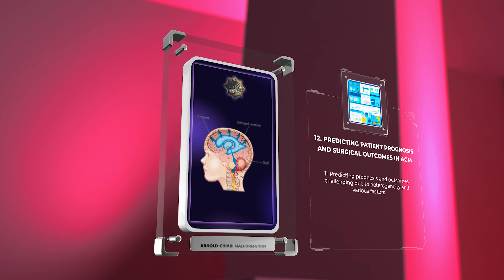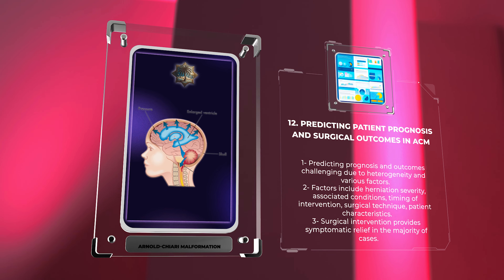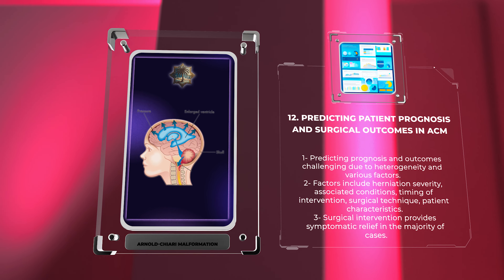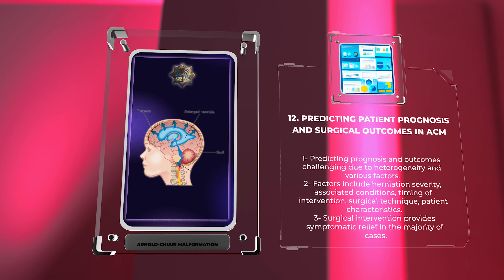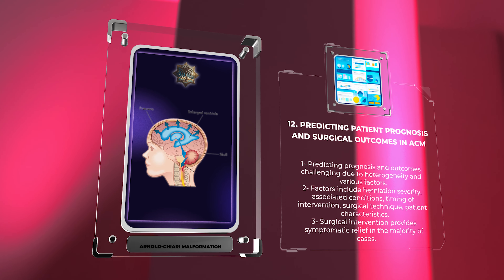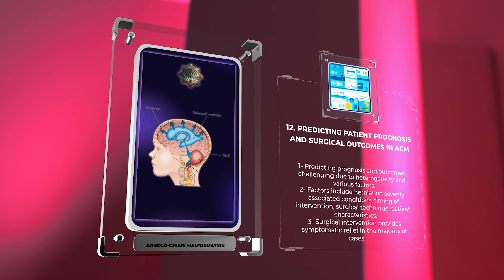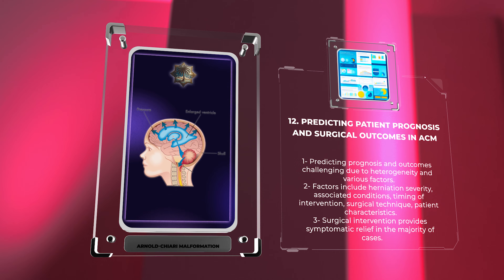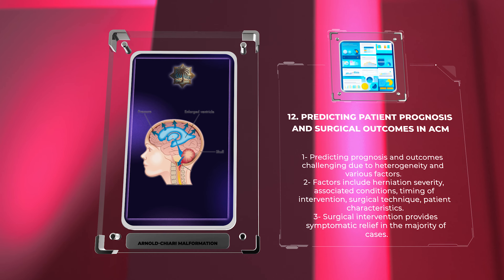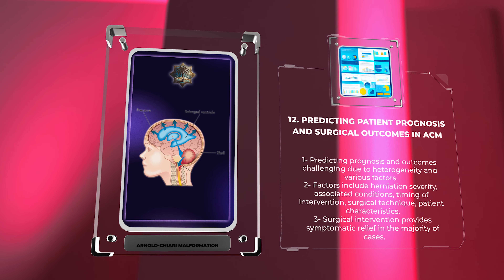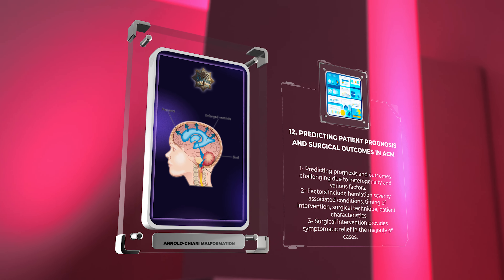Predicting patient prognosis and surgical outcomes in Chiari Malformation can be challenging due to the heterogeneity of the condition. Factors that may influence prognosis include the severity of tonsillar herniation, the presence of associated conditions such as syringomyelia and hydrocephalus, the timing of intervention, the surgical technique used, and individual patient characteristics. Long-term follow-up studies have shown that surgical intervention can provide symptomatic relief in the majority of cases, though the degree of improvement and occurrence of postoperative complications may vary. Tailoring treatment strategies and multidisciplinary collaboration can optimize outcomes.